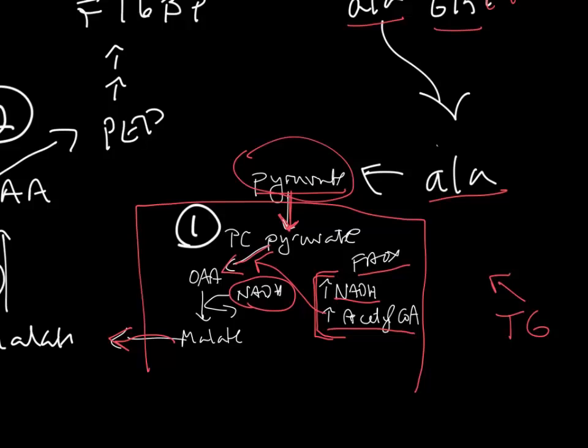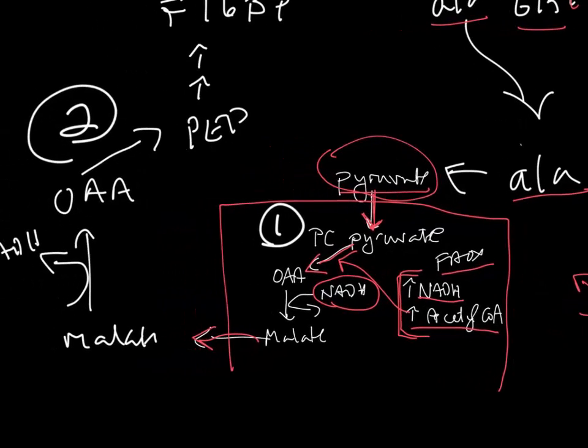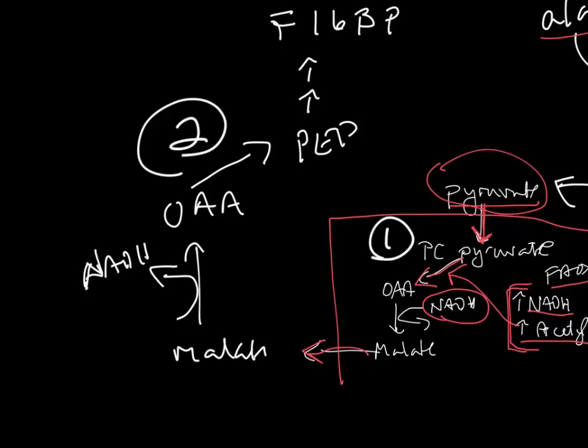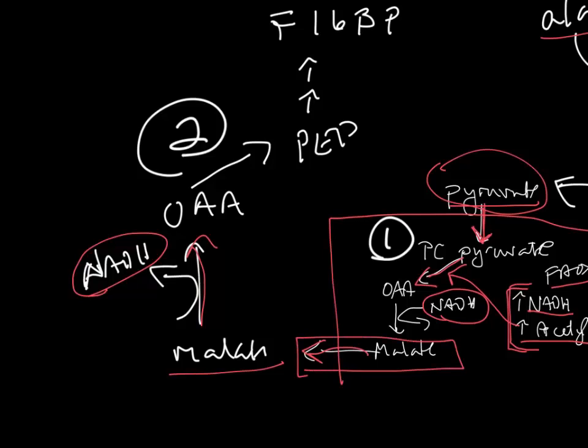So oxalacetate is converted to malate by malate dehydrogenase. There is a mitochondrial form, and then it is transported through the malate-aspartate shuttle. Malate then is converted back to oxalacetate by the cytosolic form, malate dehydrogenase. You're taking that reducing equivalent and releasing it in the cytosol. So you're really transporting the reducing equivalent by malate, the metabolite of malate.